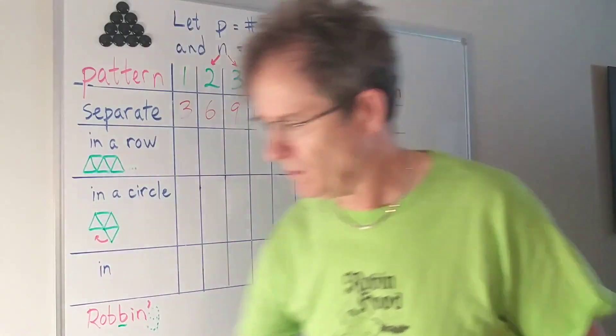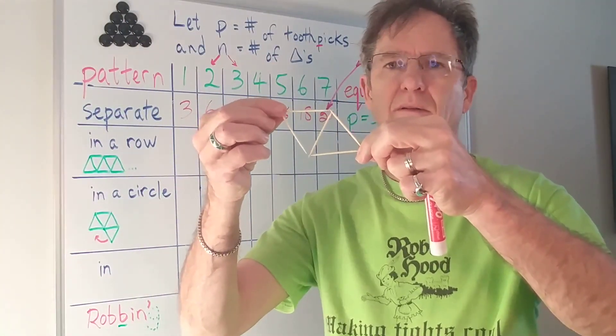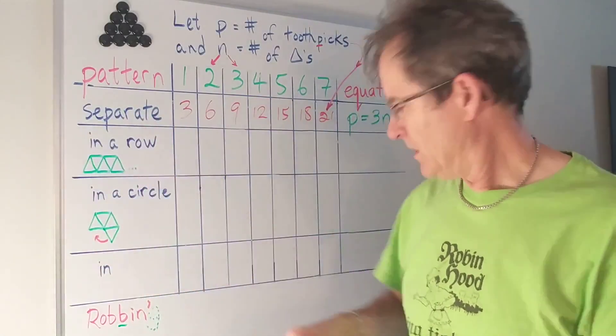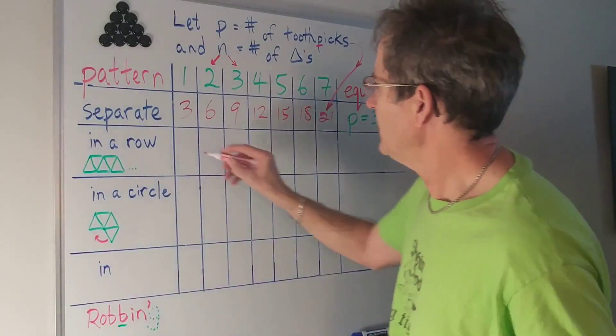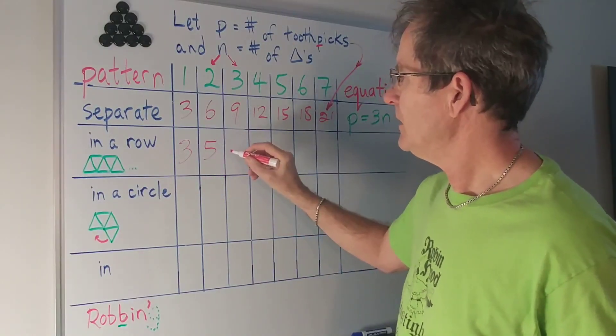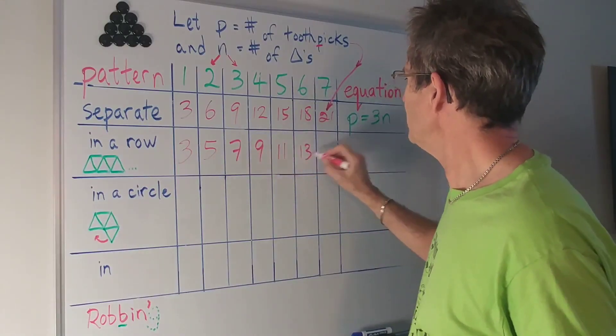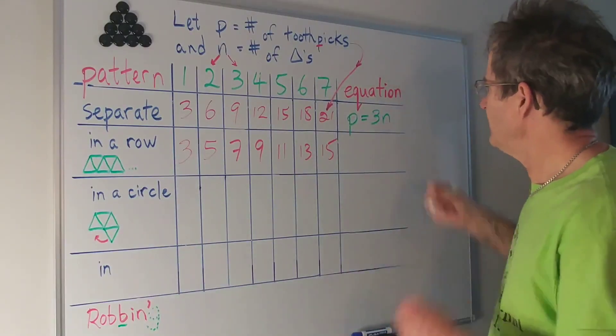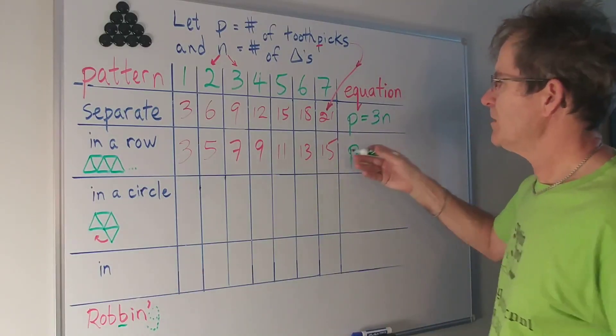But what if I put them in a row? For example I start with this one but then I add this one and I'm just going to continue down the line like this diagram shows right here. Well it still takes three for the first triangle but then only takes two more for the second one and two more from then on. So these would be the numbers.